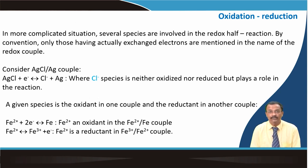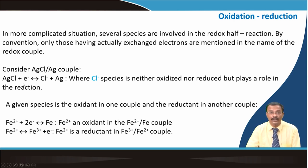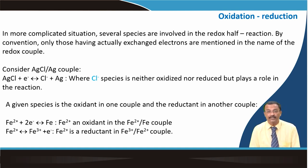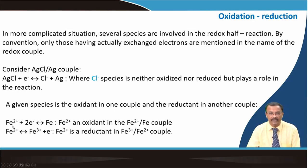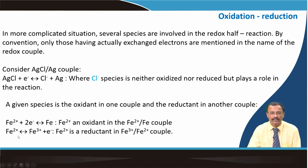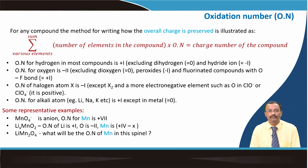In more complicated situations, several species are involved in a redox half-cell. By convention, only those that have actually exchanged electrons are mentioned in the name of the redox couple. For example, in the AgCl/Ag couple, silver chloride reacts with an electron; the chloride ion is neither oxidized nor reduced but plays a major role. Similarly, Fe²⁺ can be an oxidant in the Fe²⁺/Fe couple.